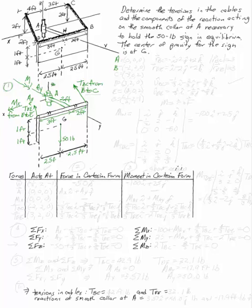That's the free body diagram — not quite complete until we specify where all the points are. A is the origin. B is at (-2, 2, 0). C is at (-3, 0, 2). D is at (3, 2, 0). E is at (4, 0, 2). And G is at (-1/2, 2, -1/2).